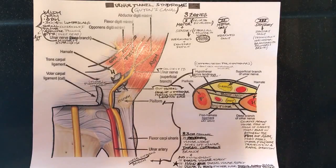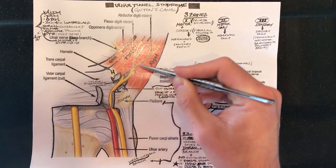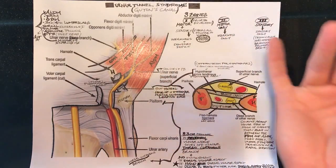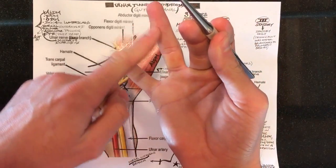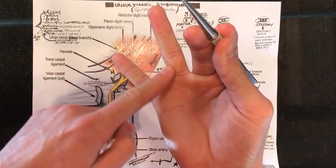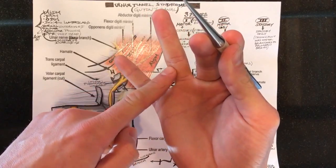So you can for making things easier you can basically think about the superficial branch as sensory only because it goes to provide sensation to the volar aspect of the ring finger on the ulnar side.